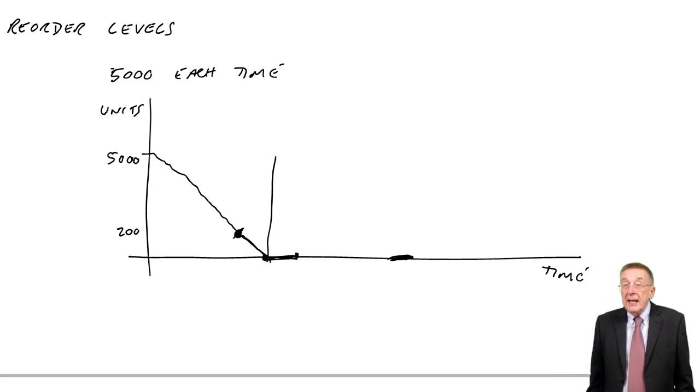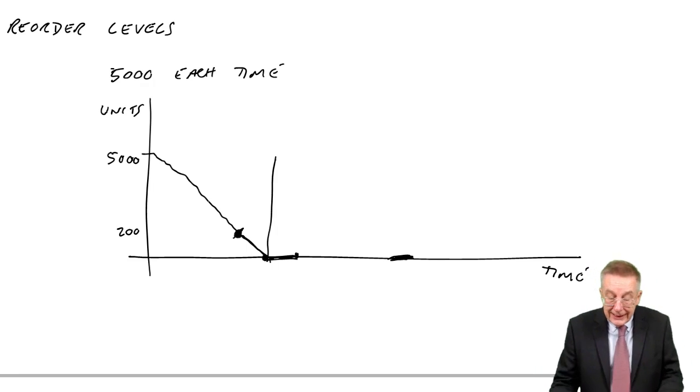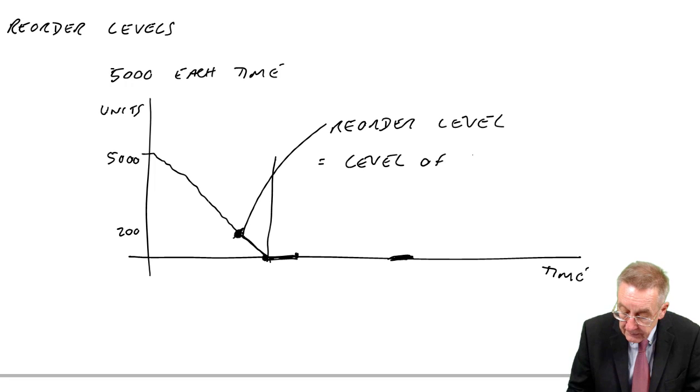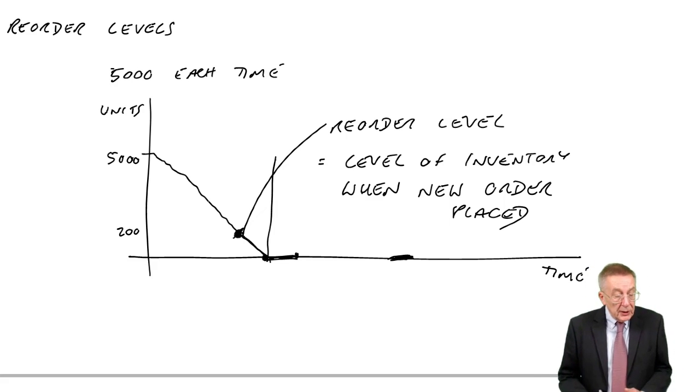So that's what we're talking about. In real life, you won't wait until you've nothing left to place an order. You'll order when you've still units left. And I made up figures here and said 200, but we call that the reorder level. It's the level of inventory when we place a new order. So let me show you what I mean. The calculations here are very easy, provided you understand what I'm getting at.